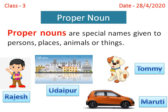The next picture is of a city. City is a general name, so it is a common noun. But Udaipur is a special name given to a particular city, so it is a proper noun. Next picture is of a dog. Dog is a common noun. But Tommy is a proper noun because it is a special name given to a particular dog.